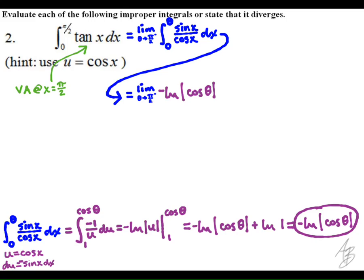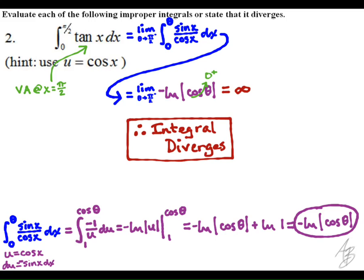We go back to our original limit and evaluate the expression. As theta approaches pi over 2 from the left, cosine is positive, so this is effectively the natural log of cosine of pi over 2. The cosine of pi over 2 is 0, so this term approaches 0 from the right, and the natural log of 0 approaches negative infinity. The opposite of negative infinity is positive infinity, so the integral diverges.